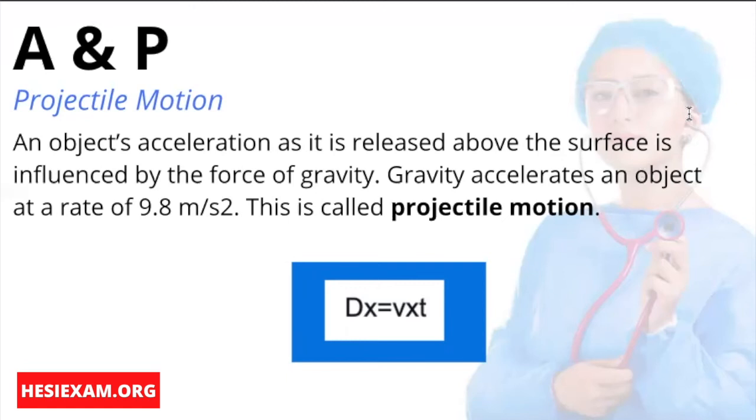An example would be if a can was kicked at the edge of a cliff. The can will move horizontally at the same time it falls towards the Earth. The horizontal motion is not an accelerated motion. In a mathematical equation, horizontal distance, or dx, is a function of velocity, or Vx, and time, which is represented by T. The X subscript represents motion along the horizontal plane, or the X axis.